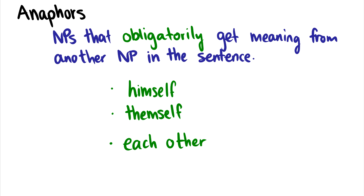Let's contrast this with anaphors. Anaphors are noun phrases that obligatorily get meaning from another NP in the sentence. So 'himself' doesn't actually refer to anything in the world. Instead, it refers to something previously in the sentence — something like John — like 'John loves himself,' where 'himself' only gets its meaning because there is another noun phrase in the sentence. Similarly, 'themselves' — we can't just say 'themselves' in a sentence and everybody knows who it's referring to. We need some other NP in there in order to give 'themselves' meaning.